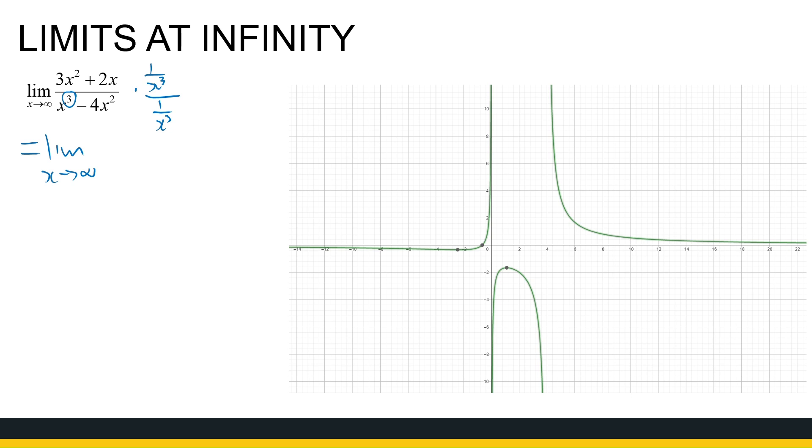Now, x is not approaching 0, so I can do that, and the limit value will be the same. So we've got 3 over x plus 2 over x squared divided by 1 minus 4 over x.